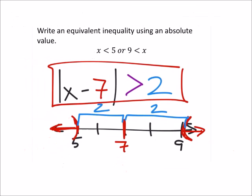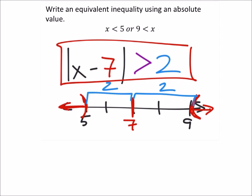But let's check just to make sure that it works. So I would split this up, right. I've got x minus 7 is greater than 2. Well, that should give us, if I add 7 to both sides.